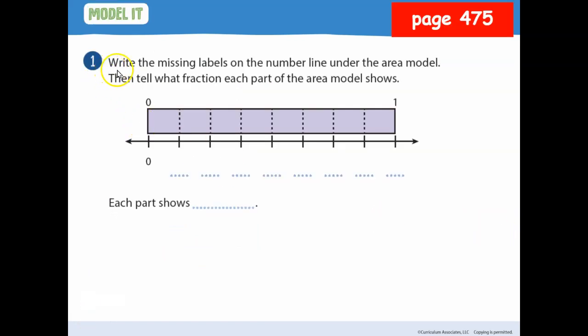Okay, so it says write the missing labels on the number line under the area model. Then tell what fraction each part of the area model shows. It should say unit fraction because it's asking what's a fraction for each section individually.